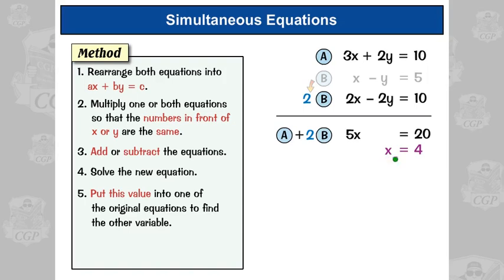So we put this value, x equals four, into one of the original equations to find the other variable, so to find out what y equals. So let's put this value of x into equation A, so this one here. So 3x, well that's going to be three times four is twelve, and then the rest of the equation stays the same.